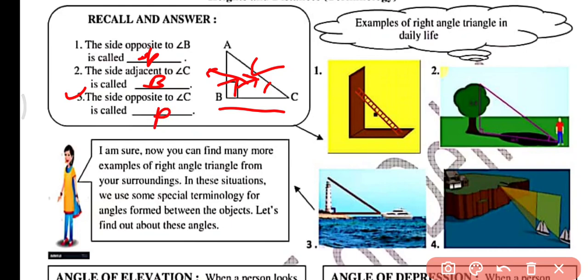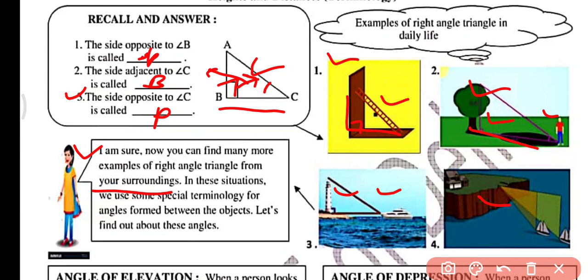Now let's look at examples of right angle triangles in daily life. A ladder leaning against a wall forms a right angle triangle. Similarly, a tree and a person in a field form a right angle triangle. A ship and a building, and a ship and an island, also form right angle triangles. You can find many more such examples from your surroundings.